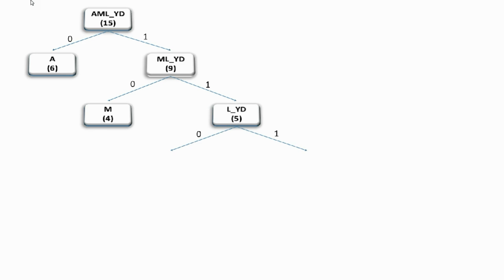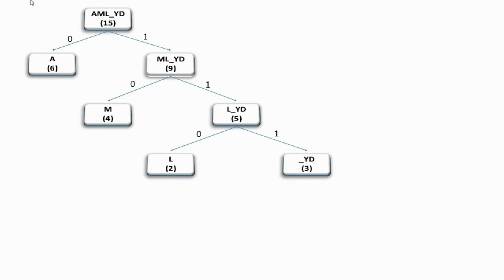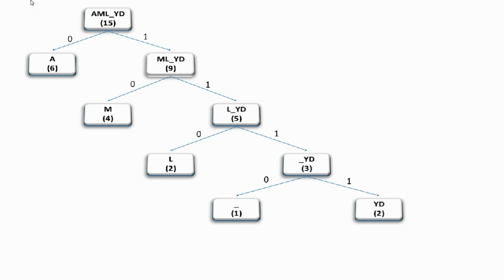This is split up again into two branches — branch 0 and branch 1. Branch 0 contains character L with two counts, and branch 1 contains the remaining characters space, Y, and D with three counts. This group is split up again into branch 0, containing space with one count, and branch 1, containing Y and D with two counts.